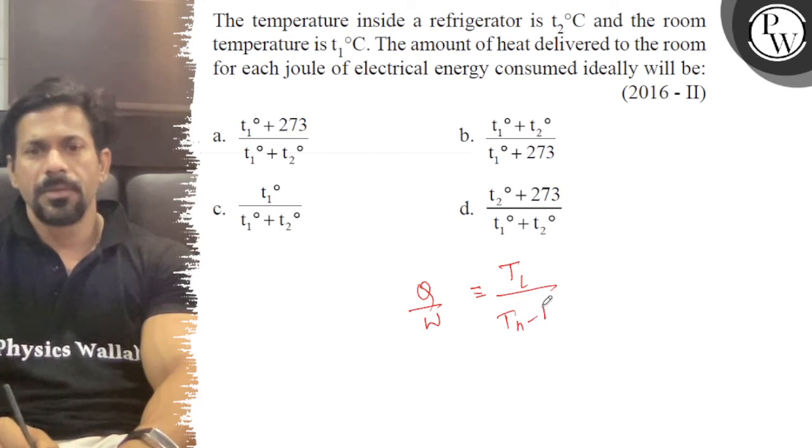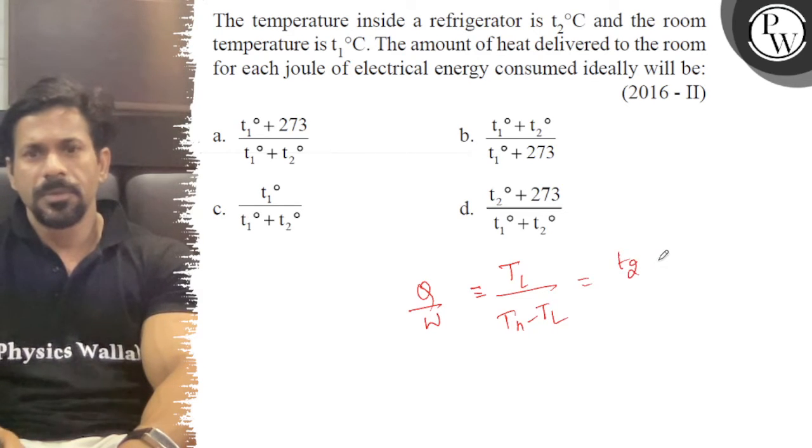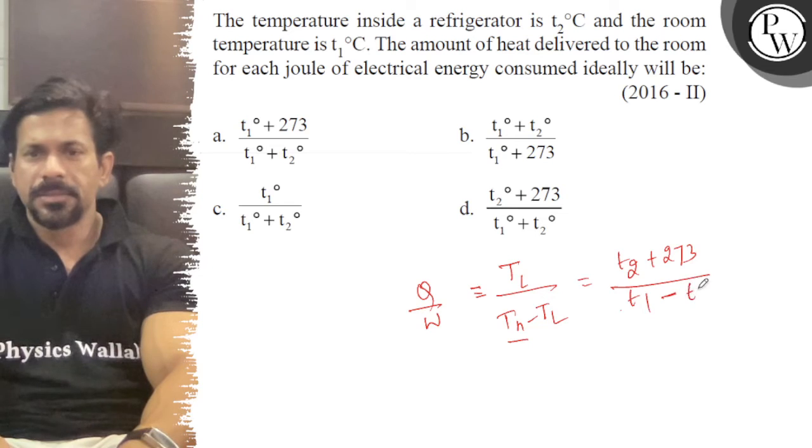So T lower is T2 plus 273, and T higher is T1 minus T2.